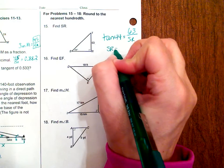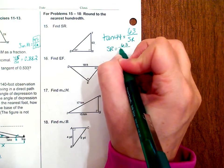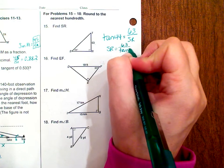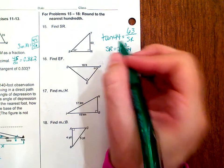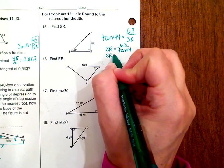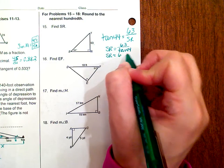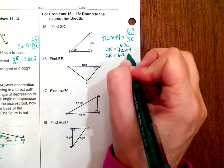So SR is equal to 63 divided by the tangent of 44. Plug that into your calculator. Rounding to the nearest hundredth, SR is approximately 65.24.